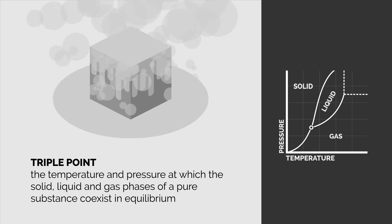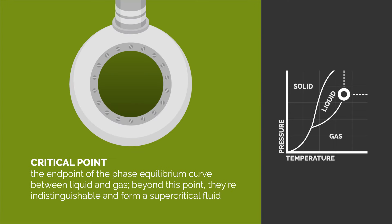The particles of the substance are loosely arranged between the rigidity of a solid and the free movement of a gas. The critical point is the endpoint of the phase equilibrium curve between liquid and gas.